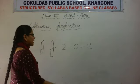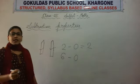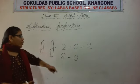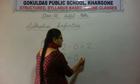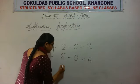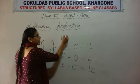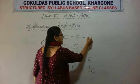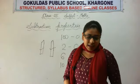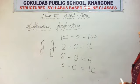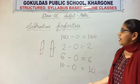Likewise we can do it with any number. 6 minus 0 — we are not taking any number away from 6, so 6 minus 0 is 6. 10 minus 0 is 10. 100 minus 0 is 100. So whenever 0 is subtracted from any number, the result will be the number itself.